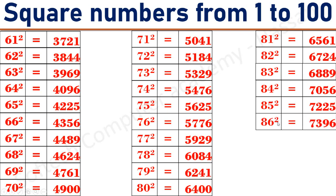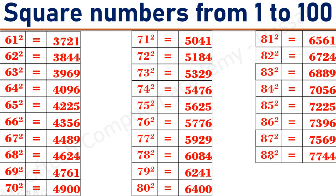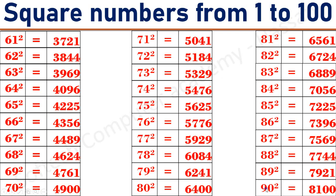86 square equals 7929. 88 square equals 7744. 89 square equals 7921. 90 square equals 8121.